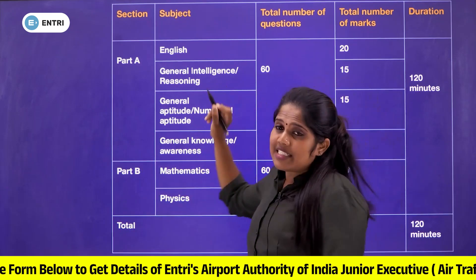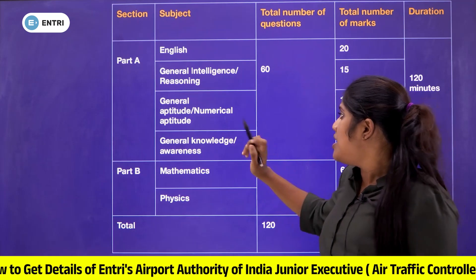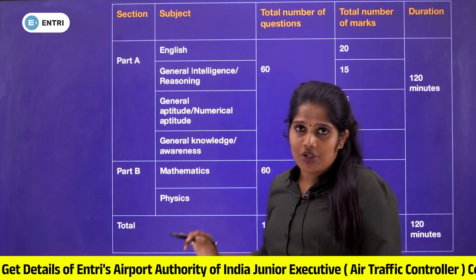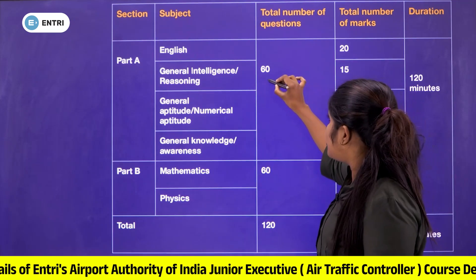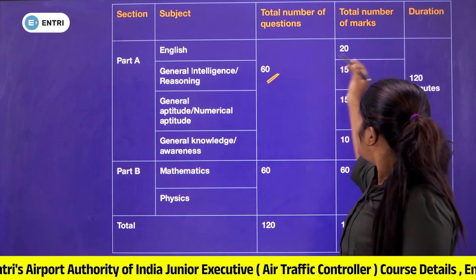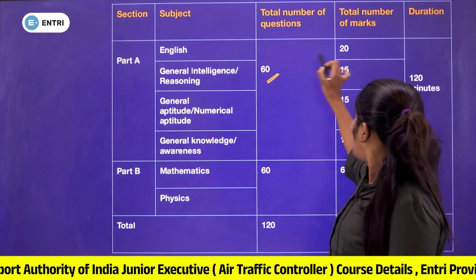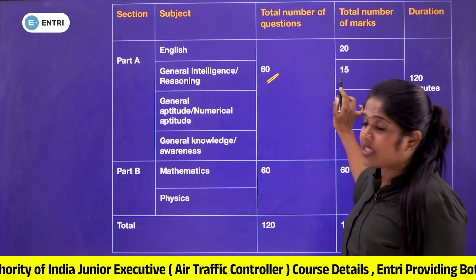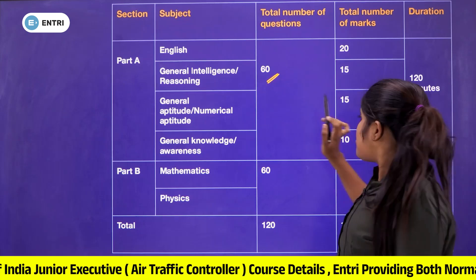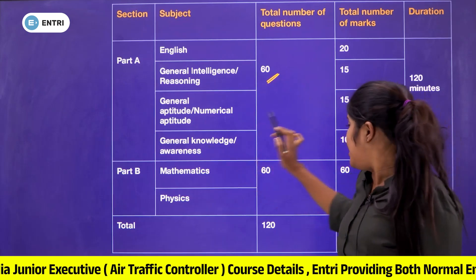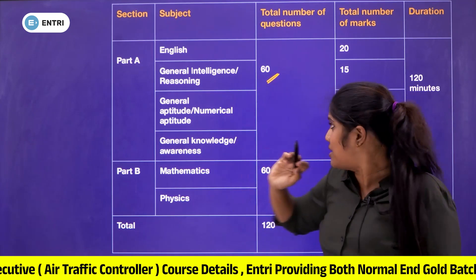Part A includes: General Intelligence and Reasoning, General Aptitude or Numerical Aptitude, and General Knowledge or Awareness — totaling 60 marks. The marks are split: English is 20, General Intelligence and Reasoning is 15, Numerical Aptitude is 15, and General Knowledge or Awareness is 10.